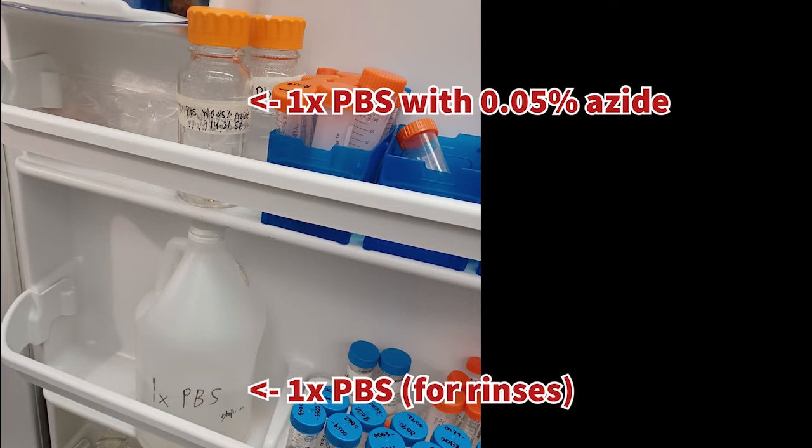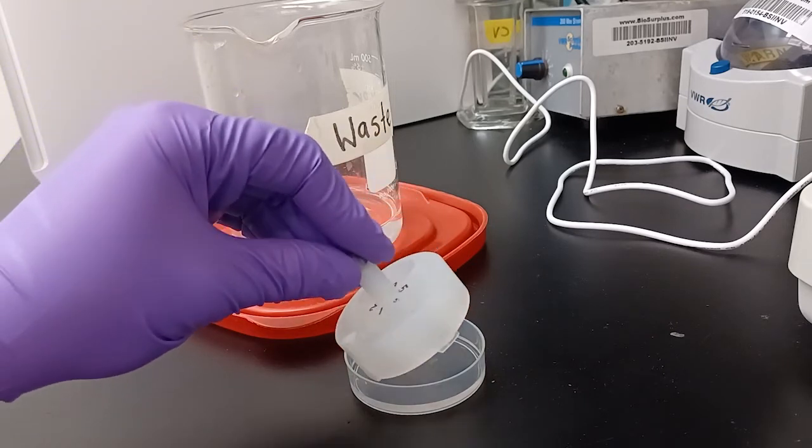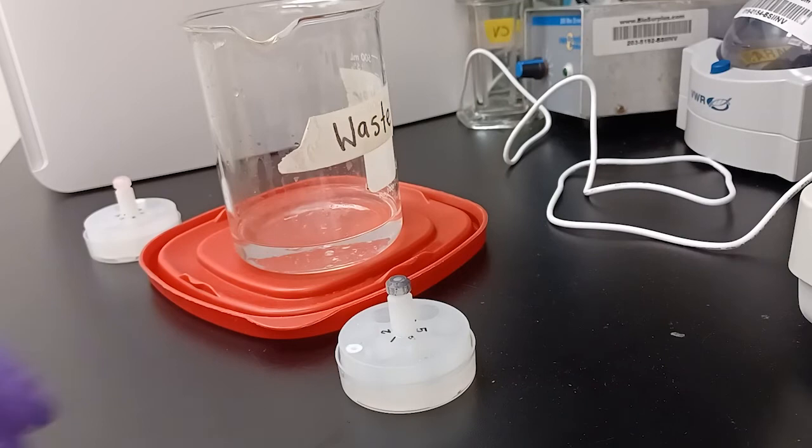As a reminder, the bottle's location is in the top shelf of the fridge door if you didn't take it out earlier. Pour this PBS with azide solution directly from the bottle into each of the three basins. Reinsert all the netwell inserts.